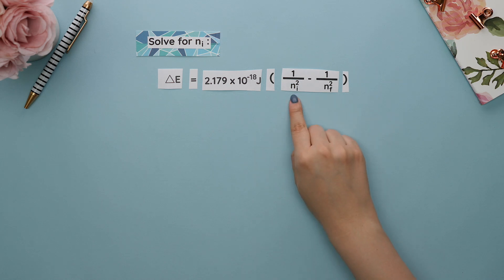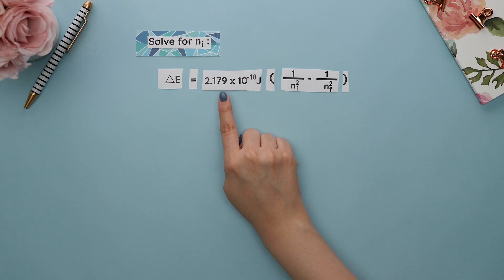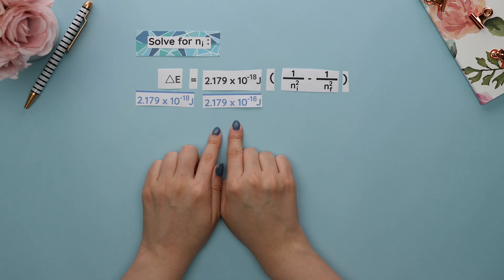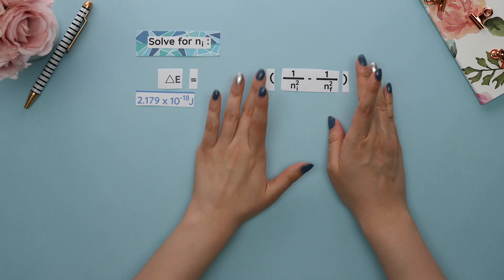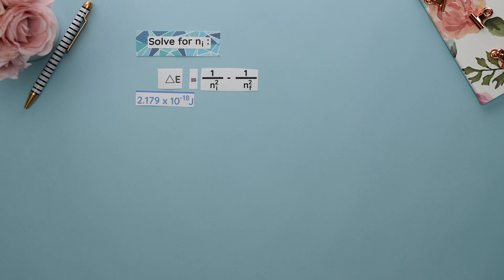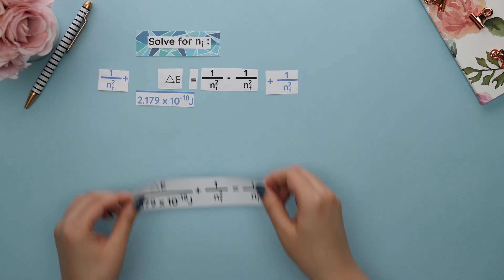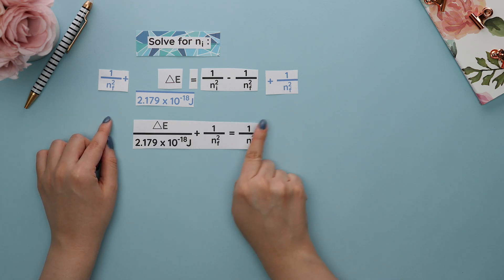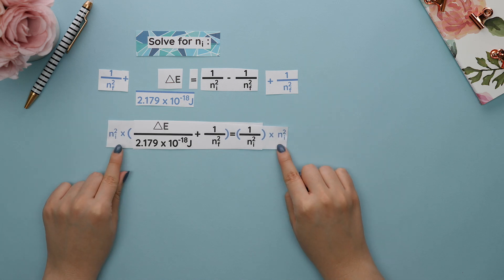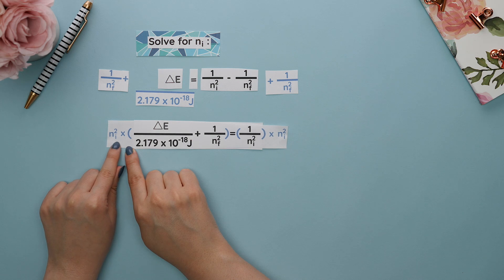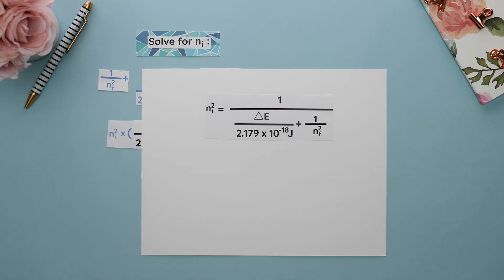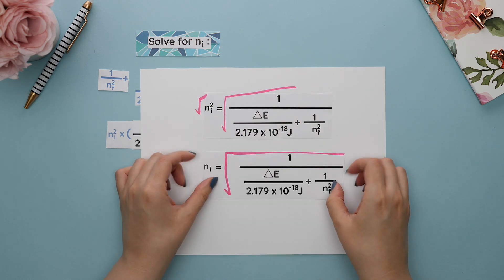Ready for a challenge? Let's use the formula from Bohr's model and solve for n_initial. Since n_initial is in parentheses, we must get rid of everything outside the parentheses first. The number outside is being multiplied, so we divide it from both sides and cancel it out. Now we can drop the parentheses. The fraction being subtracted isn't allowing n_initial to be by itself, so we add both sides by that fraction. We can't use the diagonal trick here since it only works with one fraction per side. Instead, multiply both sides by n_initial, then divide both sides by everything in parentheses. Finally, get rid of the squared by taking the square root of both sides. This is our answer.